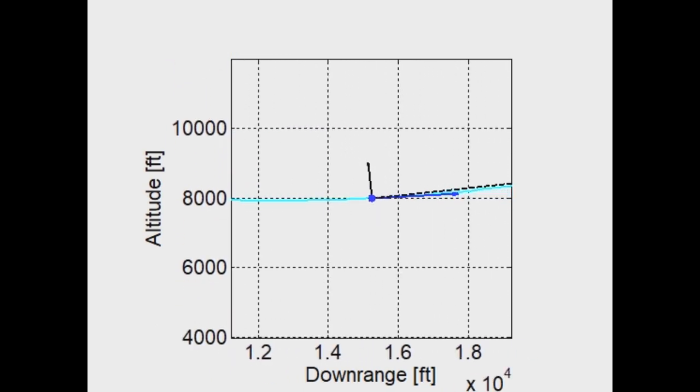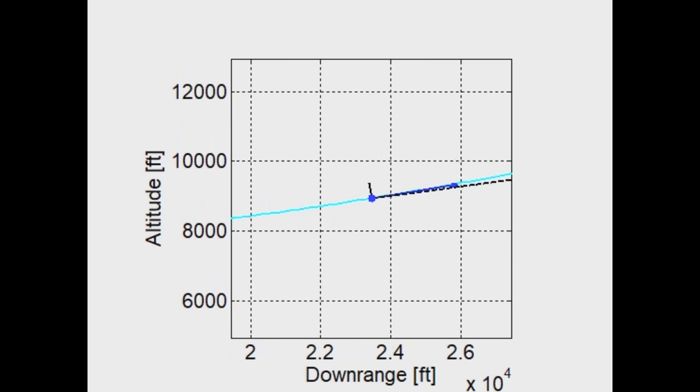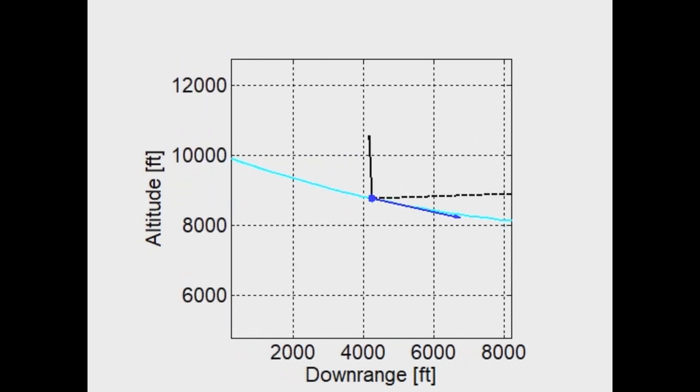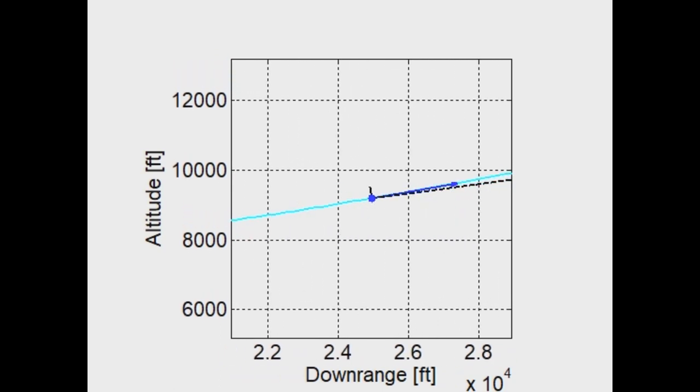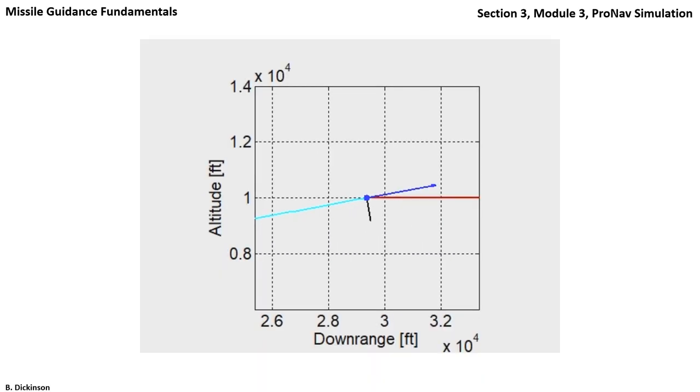The acceleration command is decreasing as time increases. The fact that the acceleration is decreasing implies that the pursuer is achieving a collision course or a collision triangle.